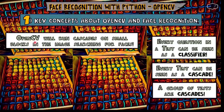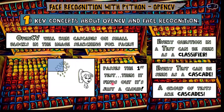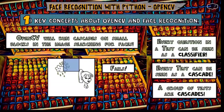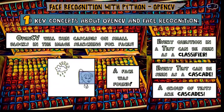Now we know that OpenCV will run cascades on small blocks in the image, searching for faces. For example, with this image, it will start here on this block — there is something that looks similar to a face, but then it finds out it is just a cloud in another cascade. So it fails and moves to the next block, and fails again, and finally a face was found.